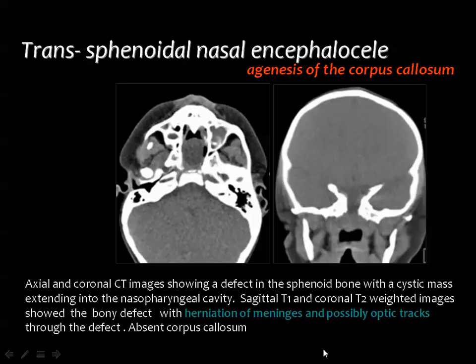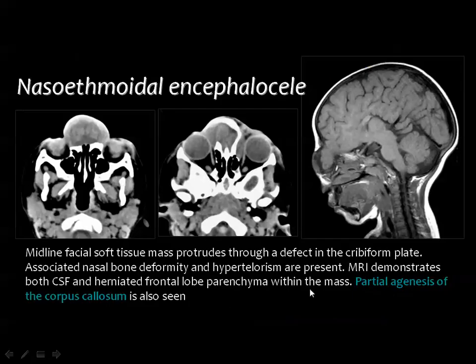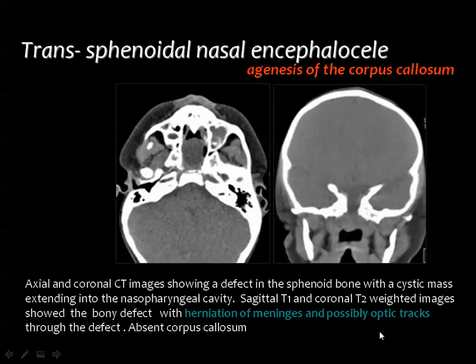A commonly associated anomaly is abnormality of the corpus callosum. In this case, only a very small part of the corpus callosum is visible; the rest of the corpus callosum is absent.